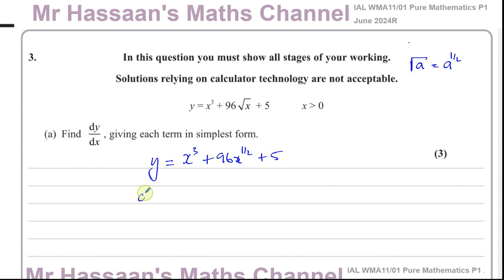So we want to find dy/dx. We're going to differentiate this by multiplying the coefficient by the power and taking one from the power. So 3 times x to the power of 2, and a half times 96, which is 48, x to the power of negative a half. Half times 96 is 48. A half minus 1 is minus a half. And any constant term is dropped. So this is dy/dx. Three marks for that.